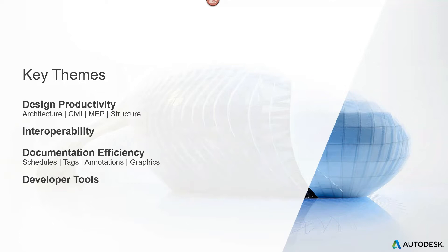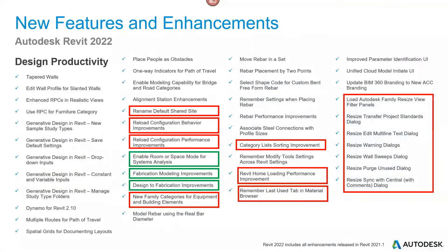There are also a few tools for developers which I'll briefly touch on at the end. I've highlighted the new features predominantly pointed towards MEP. On screen you can see quite a lot of updates under the first category of design productivity. The ones highlighted in red are those that would gain efficiencies for MEP users, and the ones in green are specifically MEP toolsets.